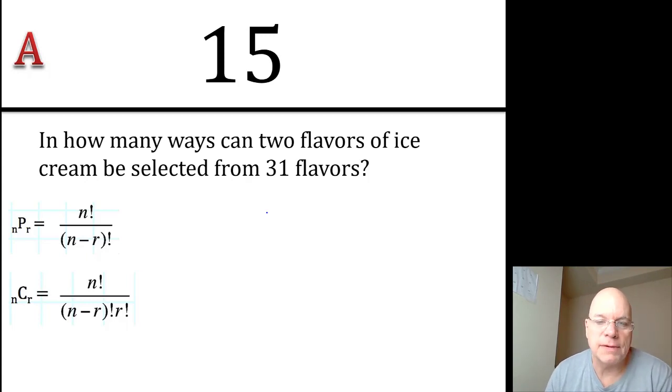If you're picking two flavors of ice cream, it might seem like a permutation, like the order matters, like I want to eat my chocolate ice cream before my strawberry ice cream or something, but if you get two flavors, you get two flavors, and which two you get, like if you get chocolate and strawberry...